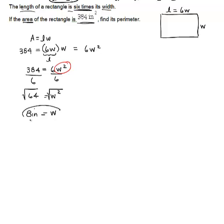So my width is 8 inches, but they didn't ask me for my width. They asked me for its perimeter. So in order to find the perimeter, again, I need to go walking around the entire rectangle. First, I need to find my length. So if my width is 8 inches, my length is 6 times 8 inches. So my length is 48 inches.